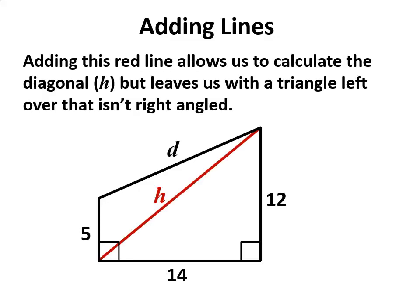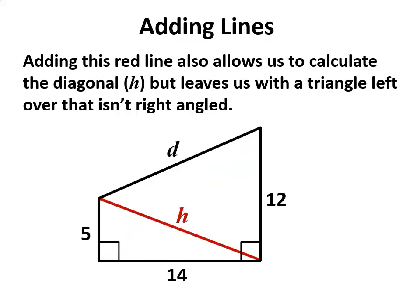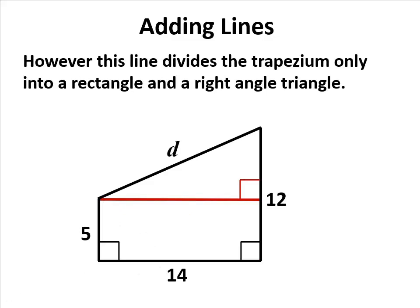We look at it and see there are no right angle triangles in a trapezium. We could put a line across, but it doesn't help us because it leaves a non-right angle triangle. We just have to know, through practice, that this is how you divide a trapezium: a rectangle and a right angle triangle.